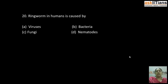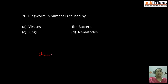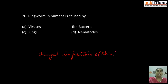Our next question is: ringworm in humans is caused by — A) viruses, B) bacteria, C) fungi, D) nematodes. The correct answer is C: fungi. Ringworm is caused by fungi; it is a fungal infection of the skin that occurs on skin in humans.